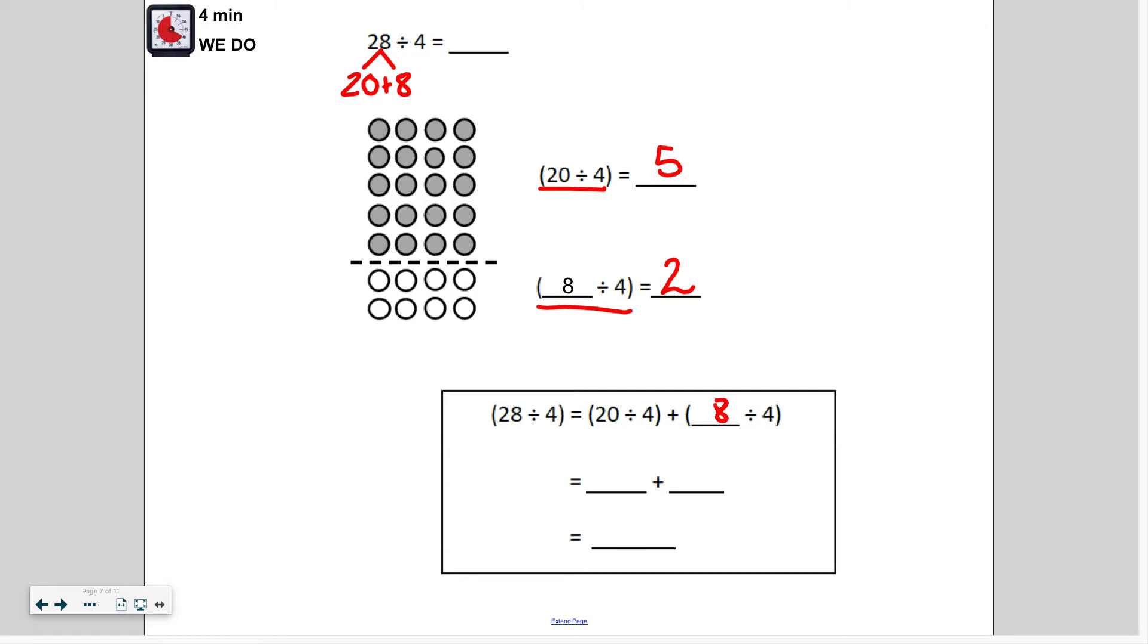And then 8 divided by 4 that's an easy fact that we've learned earlier on that is 2. So let me just fill this part in here. So we're going to add our two quotients. So we've got 20 divided by 4 was 5 and 8 divided by 4 is 2. So our final answer 5 plus 2 is 7. So let's go ahead and write that up here.